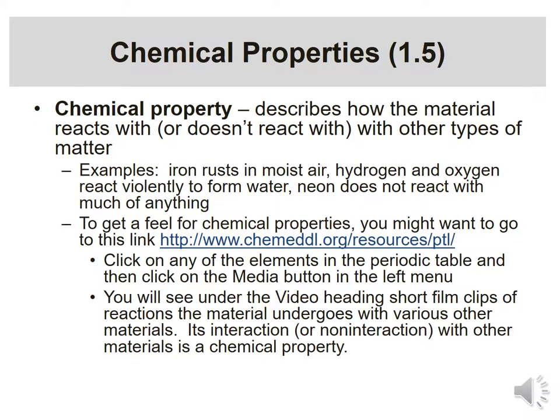When we shift and look at chemical properties, we're looking at how the material reacts with other types of material — so now it's not a standalone property anymore; we have to have something else involved. Examples include iron rusting in moist air, hydrogen and oxygen reacting violently to form water (as seen in the Hindenburg), and neon, which doesn't react with much of anything. That non-reactivity can also be counted as a chemical property.